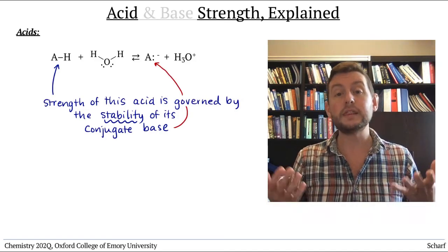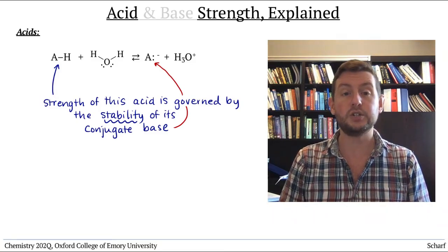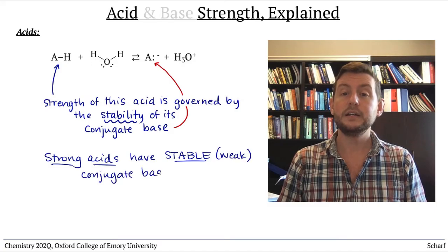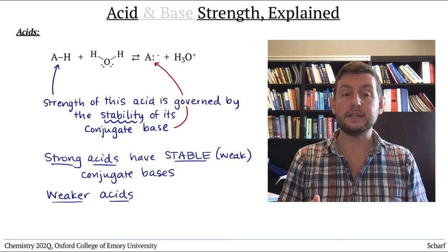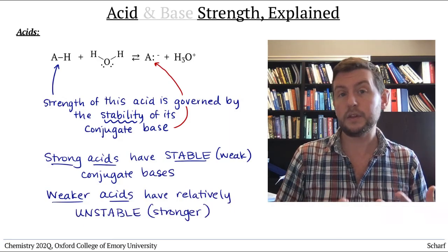Typically, we say that the strength of an acid depends directly on the stability of its conjugate base. A strong acid has a very stable conjugate base, and the weaker an acid, the more relatively unstable its conjugate base.